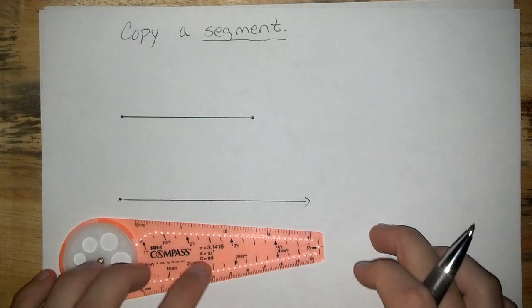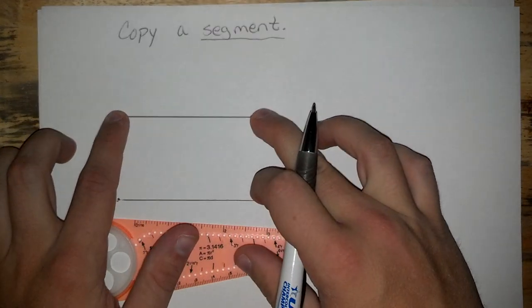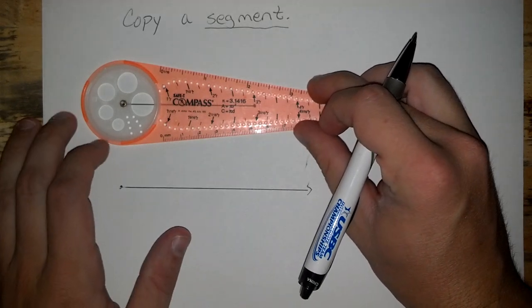Using that ray, we can measure the segment up here using our compass and go down to the ray and copy it.